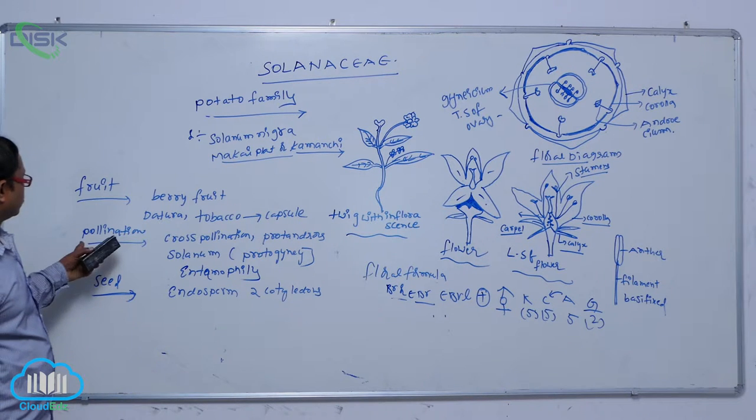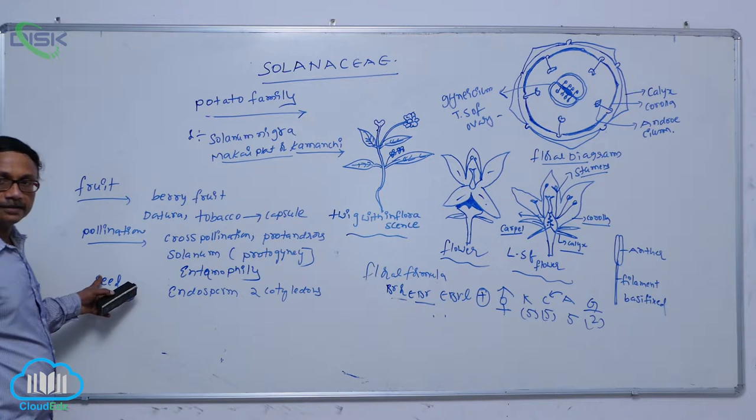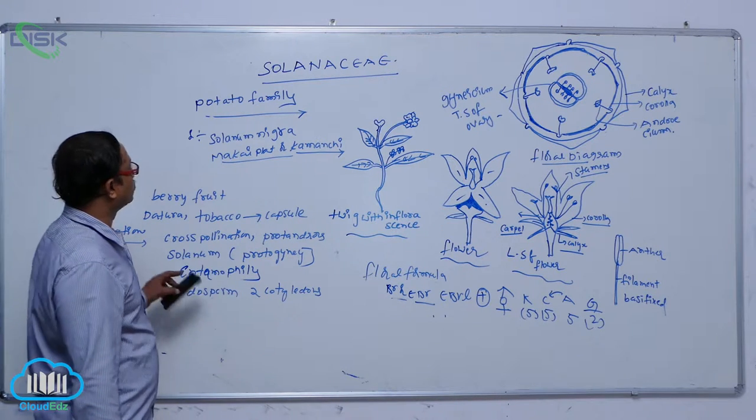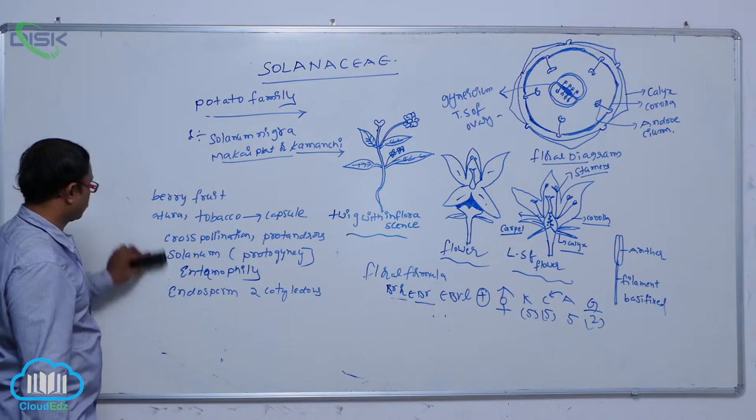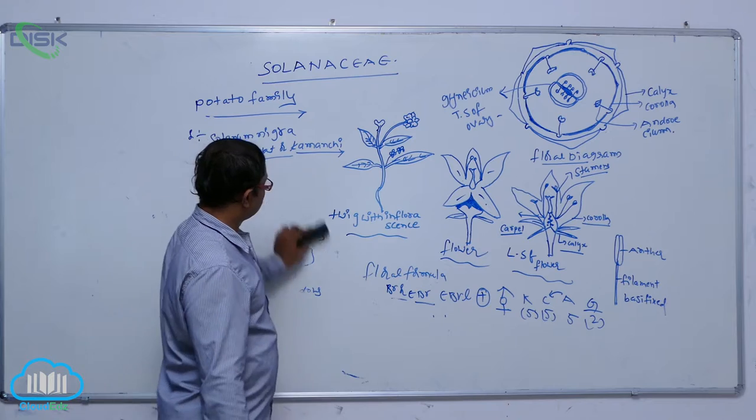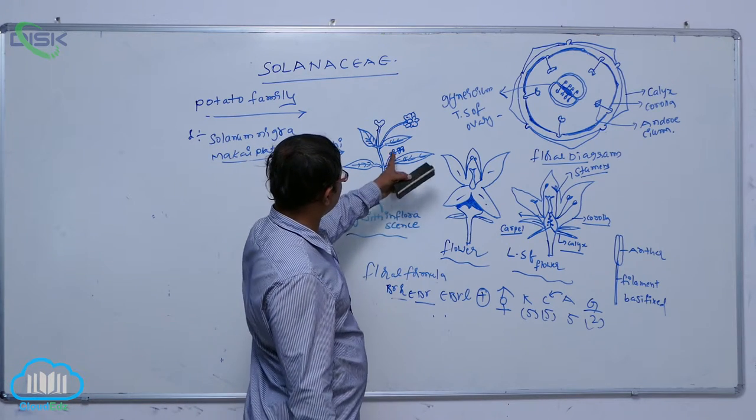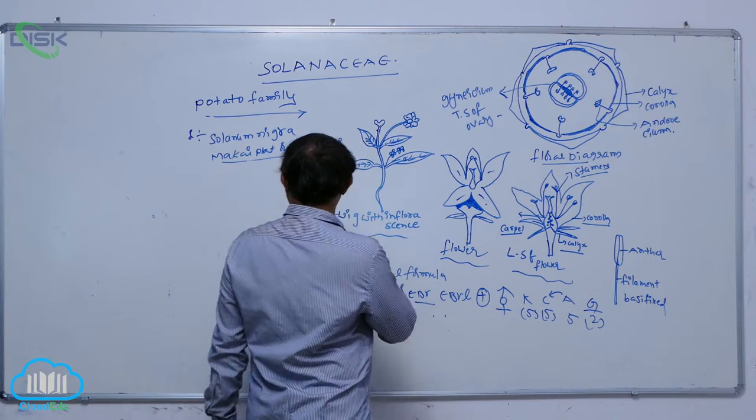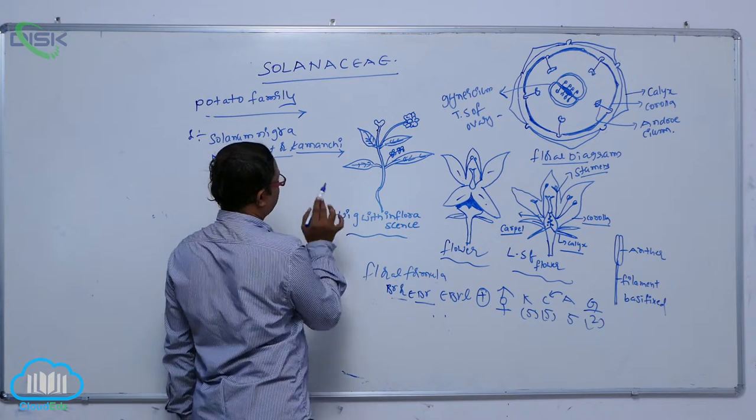Characters. So it is that floral characters. I am also explained before that. Economical importance of solanaceae family. So in this one, it is a cyme inflorescence. This plant is that solanum nigra, makai or kamanch plant.